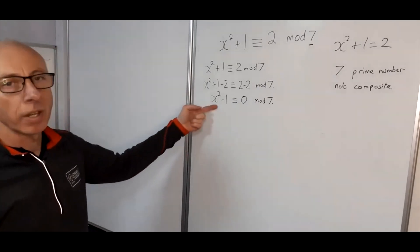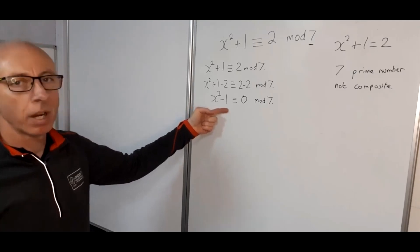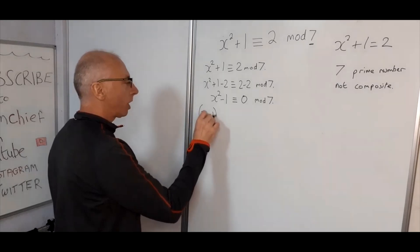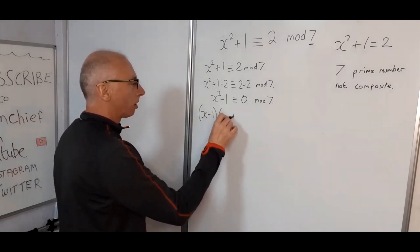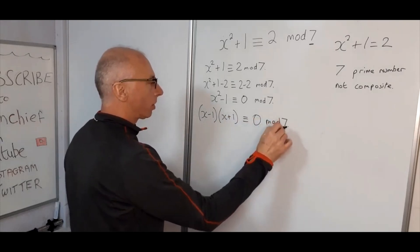Okay, so now let's see if we can factor this side. Well, x squared minus 1, we know we can factor that into x minus 1 times x plus 1, and that's congruent with 0 mod 7.